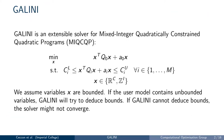Mixed integer quadratically constrained optimization problems are a class of optimization problems where the objective and constraints are quadratic. We assume variables are bounded. If they are not bounded, Galini will try to reduce bounds, and if that fails, Galini will continue solving the problem where we cannot guarantee convergence.